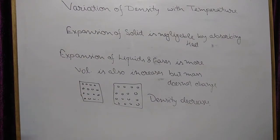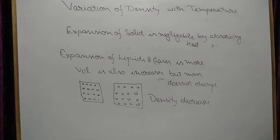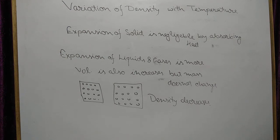So when volume increases and mass remains constant, density decreases. Whenever we heat a liquid or gas, density decreases. Remember this: as we increase the temperature of our object, density decreases, because liquid and gas expand more by absorbing heat energy. When they expand more, volume increases. As we know, density D equals mass upon volume — mass remains constant, volume increases, so density decreases.